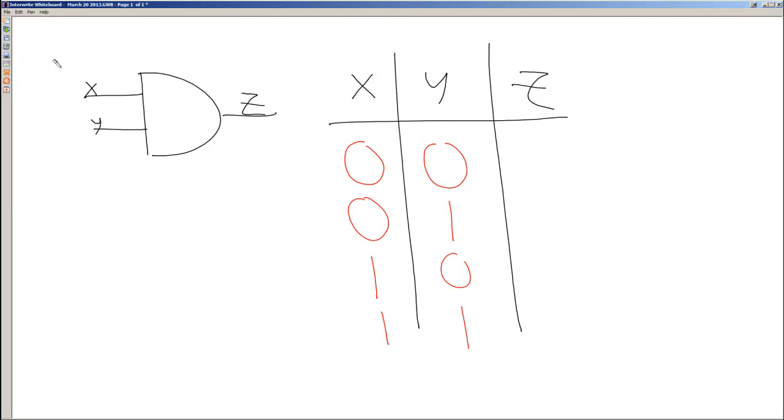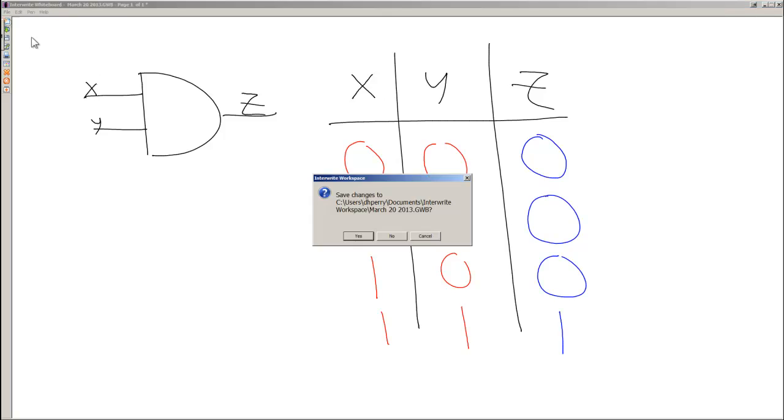And then for output with the AND gate, anytime the inputs were 0 we said the output was 0. When the inputs are 1 and 0, the output's also 0. Same thing 1 0 or 0 1, either combination. We only got a 1 output when the input was both 1. So that is the truth table. Basically it is a table of a circuit showing all the possible input combinations and the output for it.